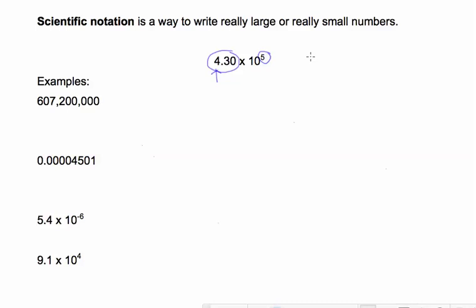So let's look at this example here. We have a really large number, 607,200,000, and there's no decimal written in it, so we know that means that the decimal is right here. And let's count how many times we have to move it. 1, 2, 3, 4, 5, 6, 7, 8. To get it so there's just one number in front of the decimal.